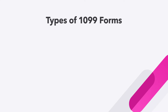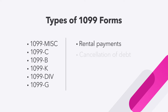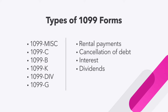It's important to note that there are many different types of Form 1099s out there. There is 1099-MISC or 1099 Miscellaneous, 1099-C, 1099-B, 1099-K, 1099-DIV, 1099-G, and others. These additional 1099 forms report other types of income, such as rental payments, cancellation of debt, interest, dividends, and unemployment benefits. In many cases, that could be taxable income to the person that receives it.